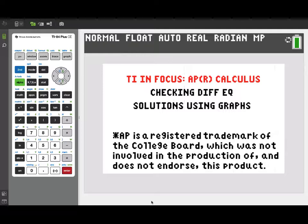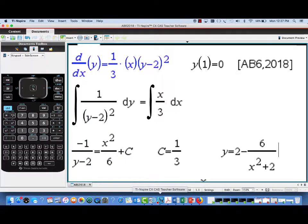Here we're going to take a look at how you can use the TI 84 to check your solutions to differential equations using graphs. As an illustration, we're going to use question AB6 from the 2018 free response questions on the AP exam.